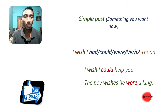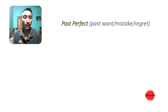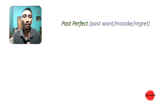Next example uses past perfect tense. Past perfect tense is used when you have a regret. That means past perfect tense refers to a mistake or regret you want to express about the past.